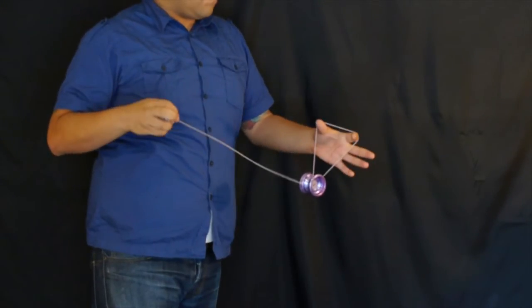Start off with a trapeze. Now we're going to spread the trapeze loop out with a couple of fingers. You can use your whole hand if you like, I only use two fingers.